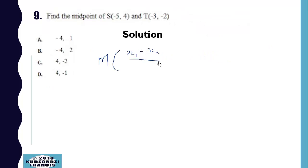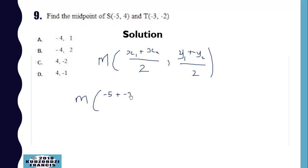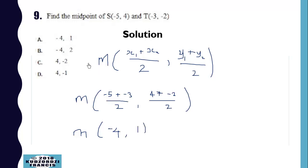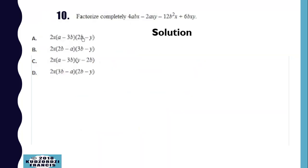Now the midpoint formula is (x1 plus x2) over 2, then (y1 plus y2) over 2. We substitute the values: (negative 5 plus negative 3) over 2, then (4 plus negative 2) over 2. This gives us (negative 4, 1).